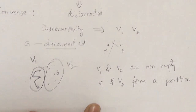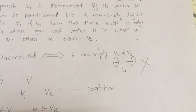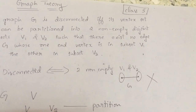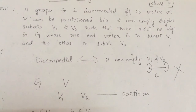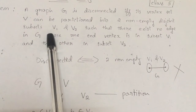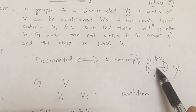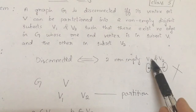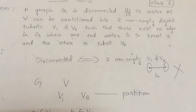Thus we can conclude: graph G is disconnected if and only if its vertex set V can be partitioned into two non-empty disjoint subsets V1 and V2 such that there exists no edge in G whose one end vertex is in V1 and another end vertex is in V2.